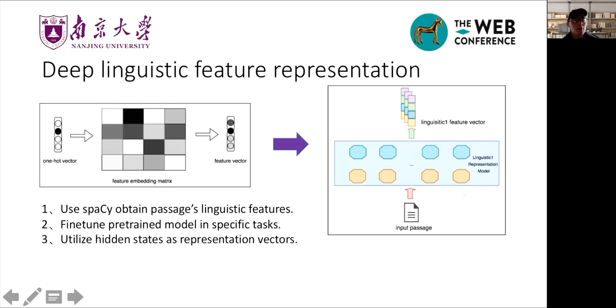To address all these problems, we propose a deep linguistic feature representation method. We employ pre-trained model and fine-tune them in specific tasks to get different linguistic representation models. For example, if we want to get NER representation model, we just need to fine-tune pre-trained model in NER tasks. Then we utilize these hidden states as the representation vectors. Because we think in the fine-tune task, the hidden states is used to predict the labels. So if the model performs well in the fine-tuned task, that means the hidden states contain enough information to denote the linguistic labels.